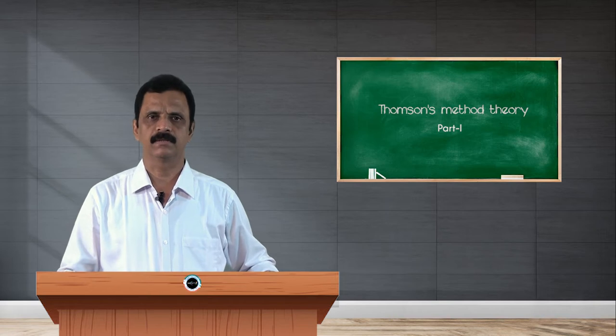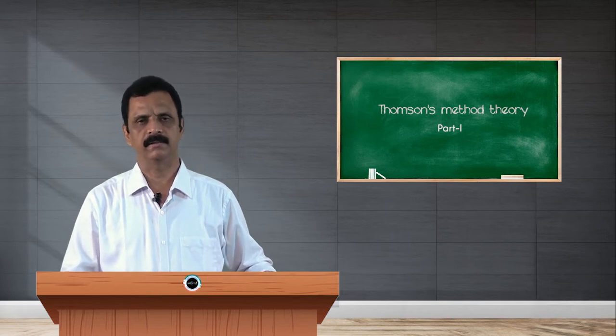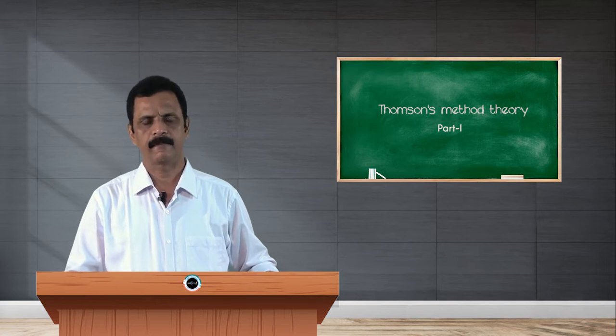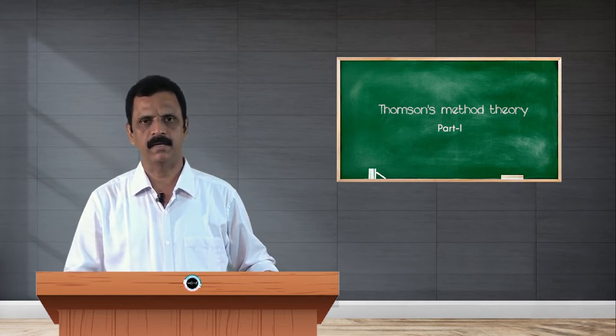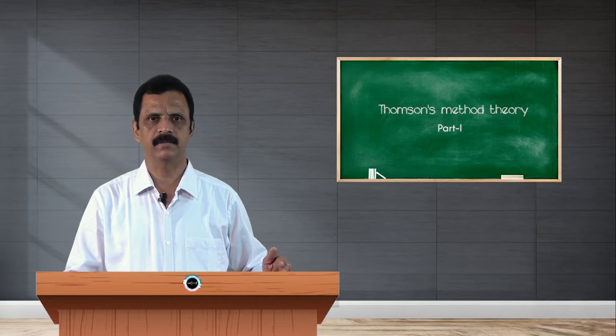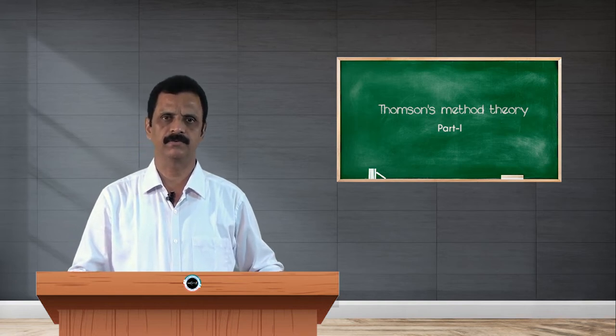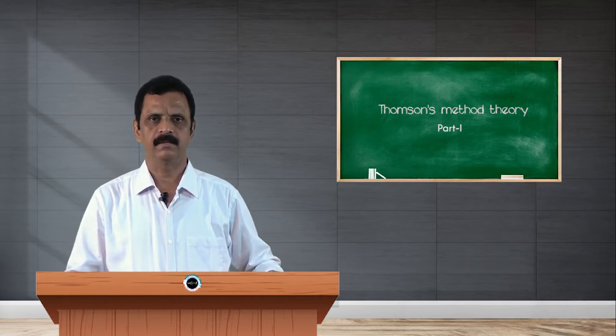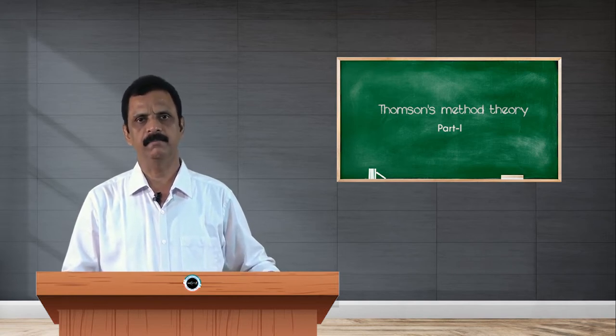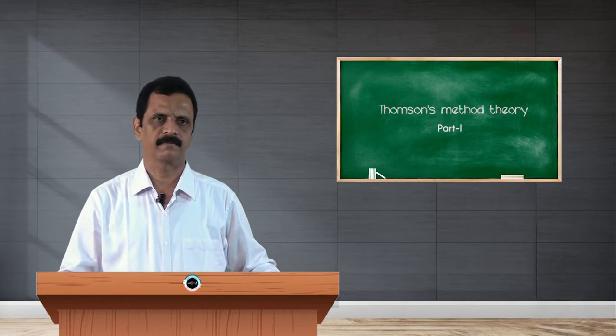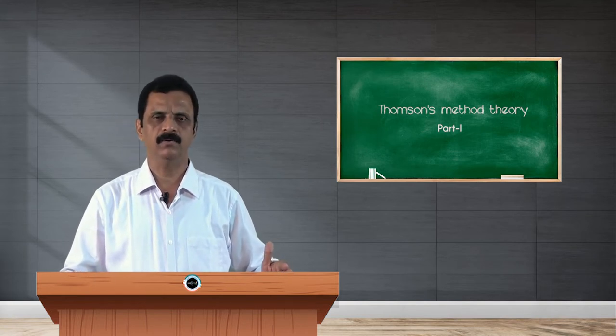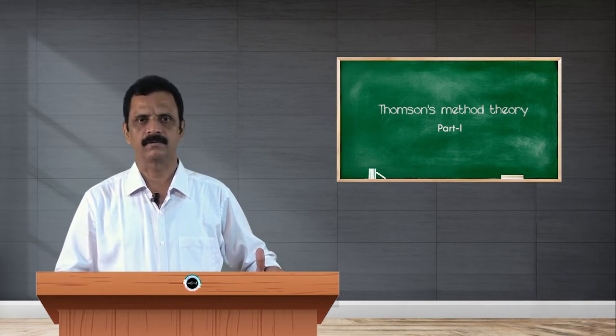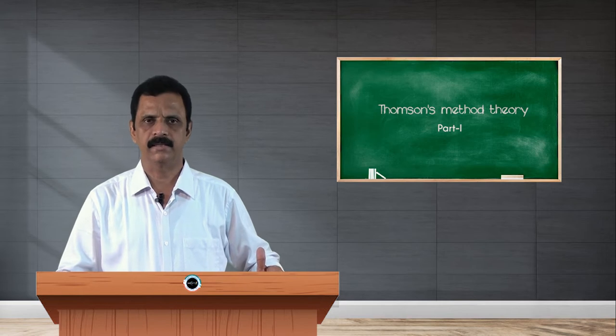That is about Thomson's experiment on the determination of e by m of electrons, the charge to mass ratio. E stands for charge, m stands for mass. So e divided by m is called specific charge or e by m of electrons. Now let us see how this important characteristic of electrons was determined by J.J. Thomson.